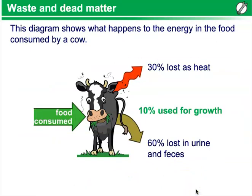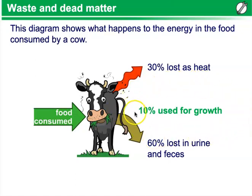This diagram shows what happens to the energy in the food consumed by a cow. The food comes in, and 30% of that energy is lost as heat, 60% is lost in urine and feces. This leaves only 10% of the energy consumed being used for growth.